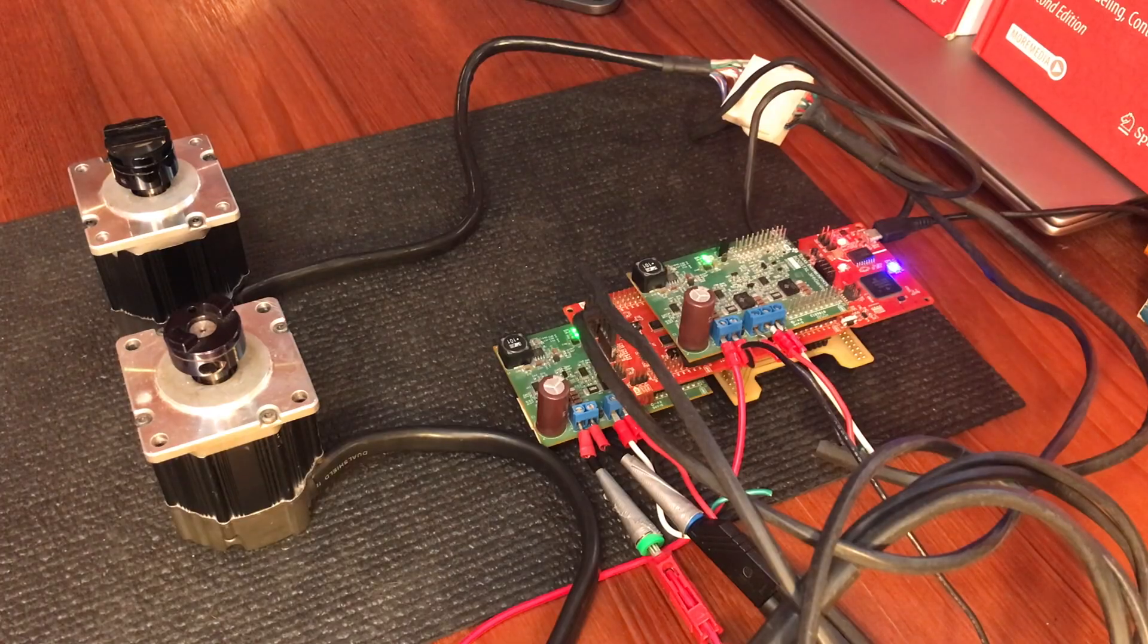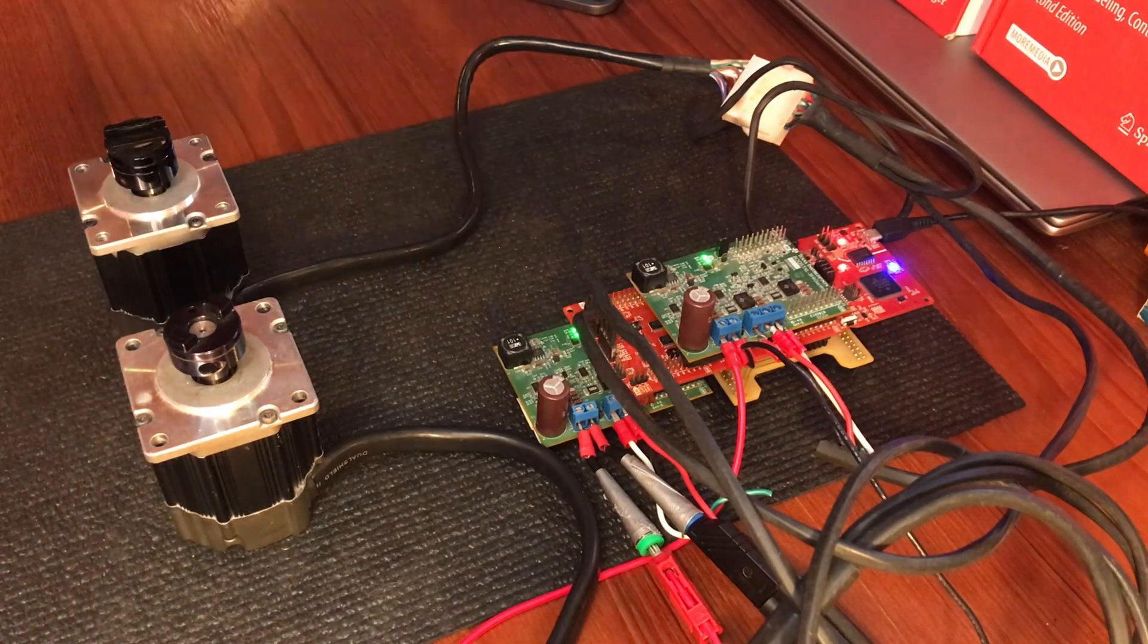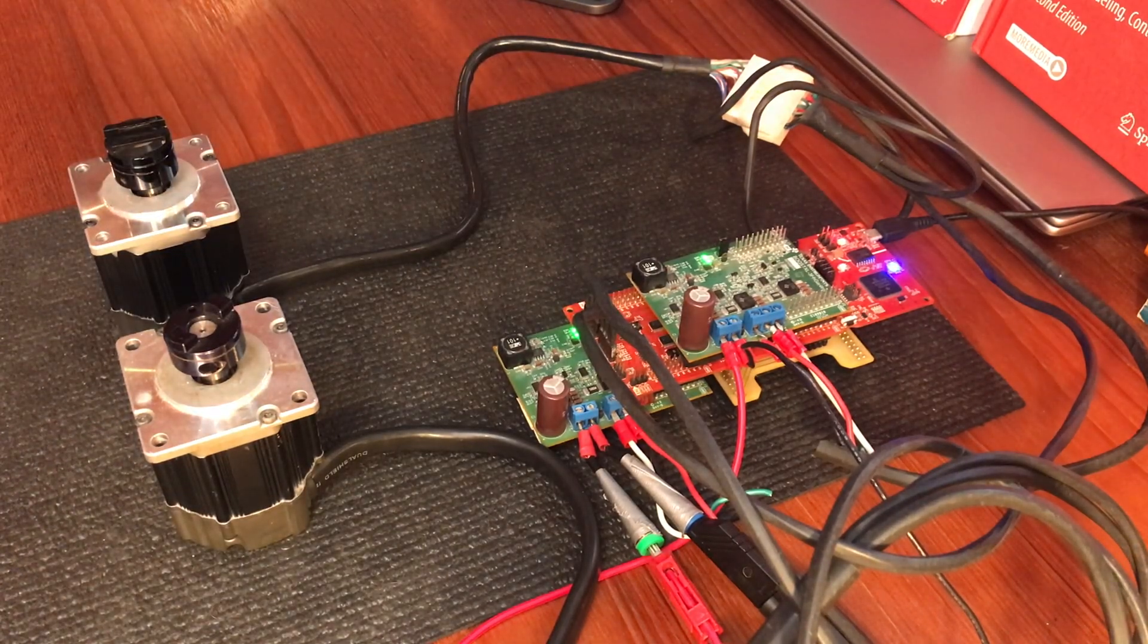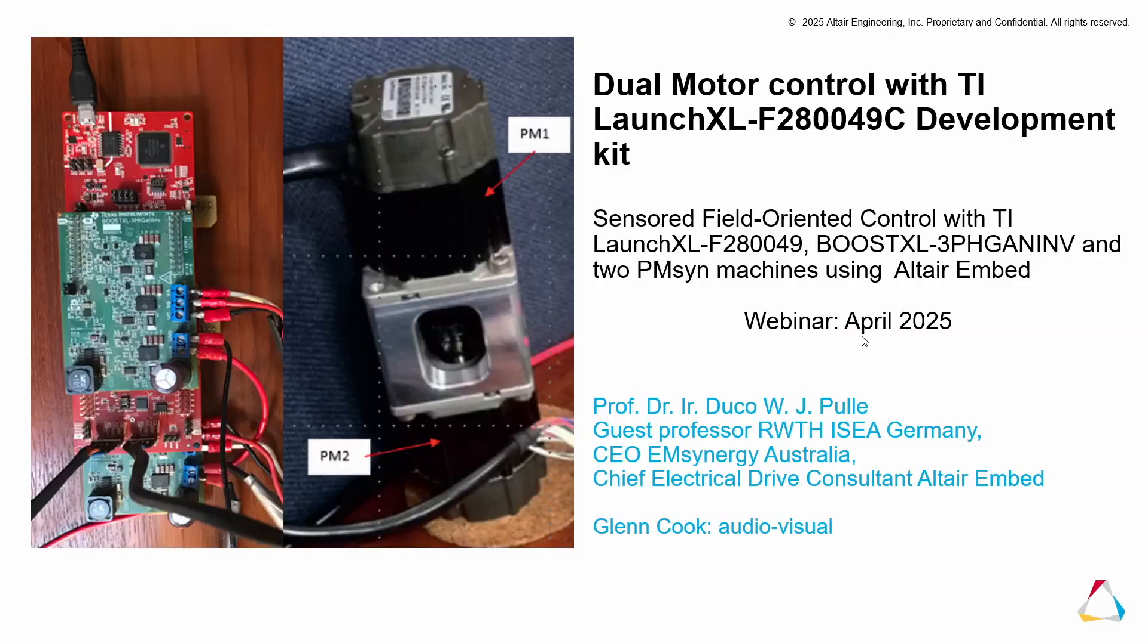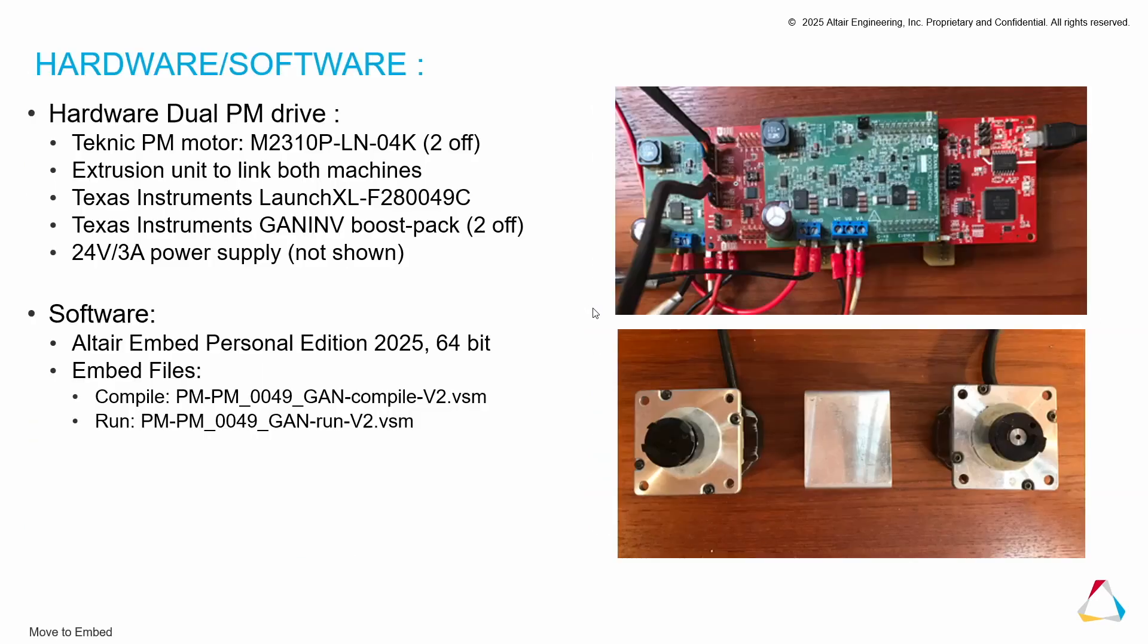That means it consists of two permanent magnet PM synchronous machines, which we initially use open and then we connect them together. We're going to use Altair Embed, personal edition, for this 64 bits.